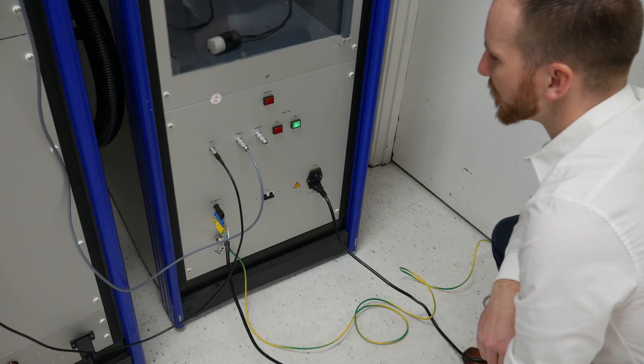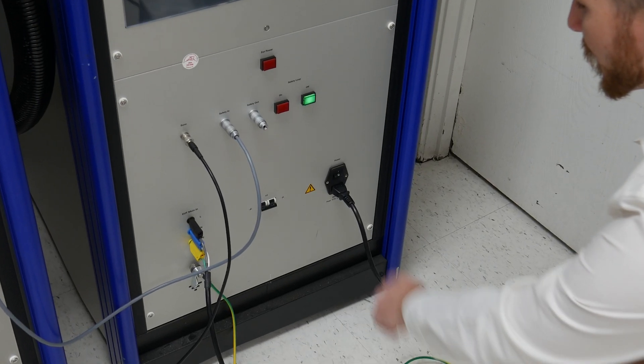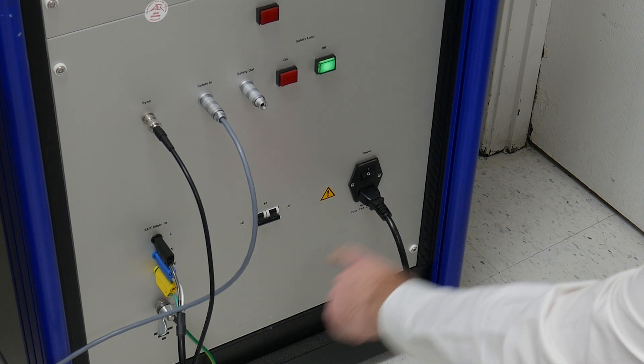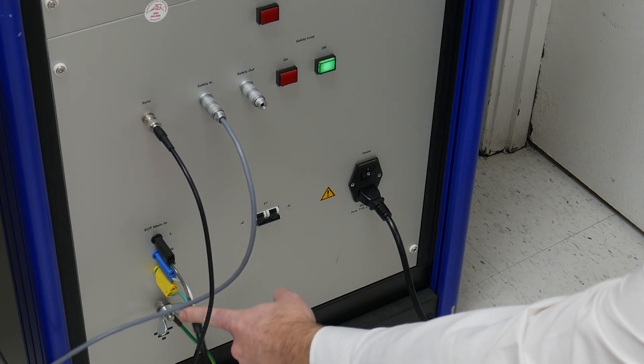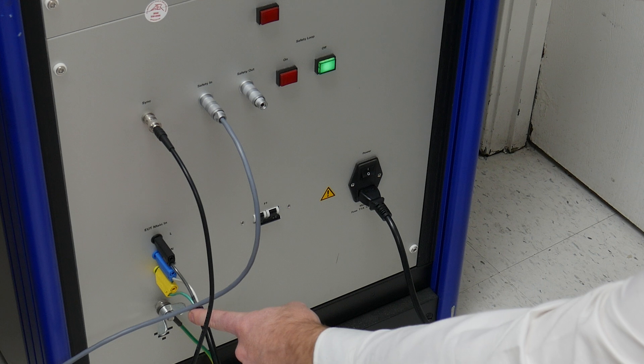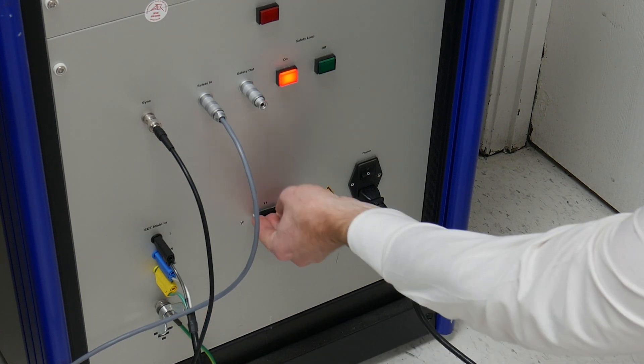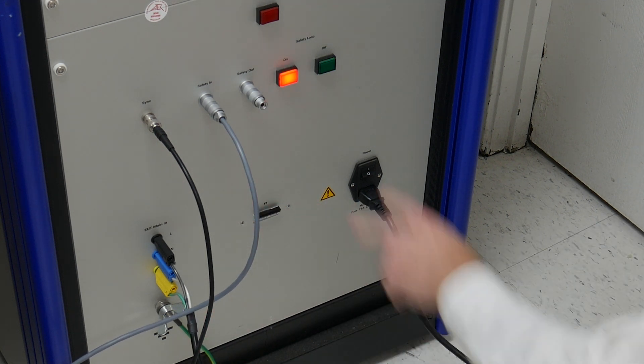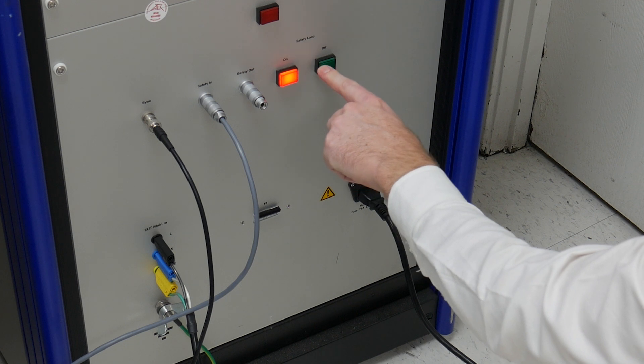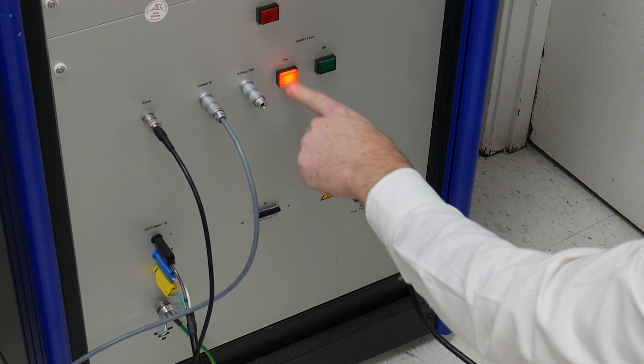On the F-P-Surge 3010 this is the power plug to power on the CDN. Here is the power connections for our device under test. This breaker here turns on the power to the device. Now we can see that our safety circuit is disengaged so we can do a test.